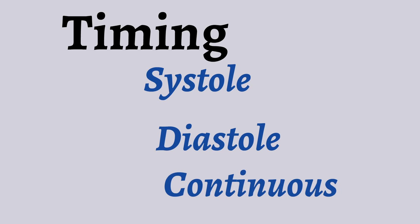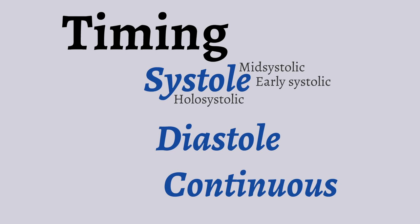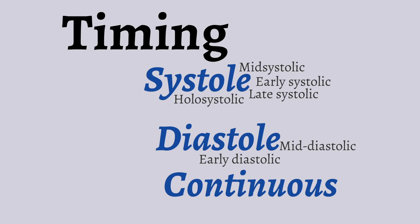Timing can be broken down further. Systolic murmurs can be further defined as mid-systolic, holosystolic, early systolic, and late systolic, depending on when they occur in systole. Diastolic murmurs can be characterized as early diastolic, mid-diastolic, and late diastolic.